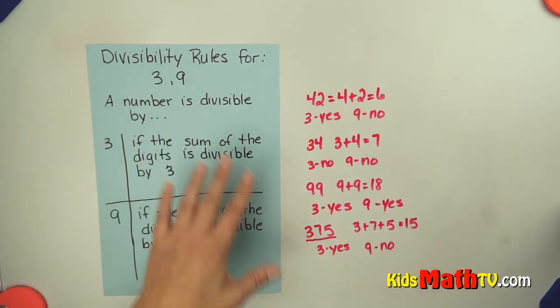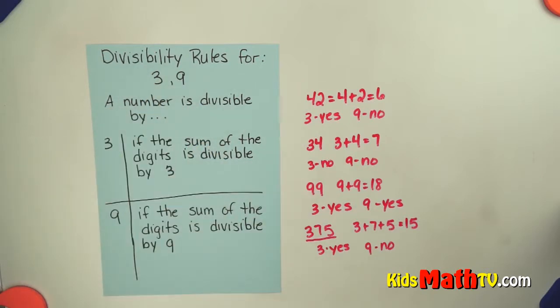So you can use the divisibility rules for 3 and 9 to find out if a number will divide by 3 or 9 evenly. And that's the end of our lesson on the divisibility rules for 3 and 9.